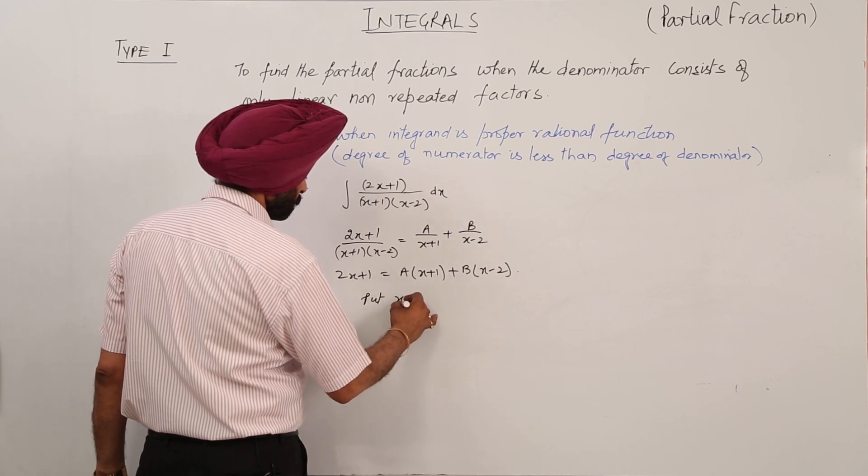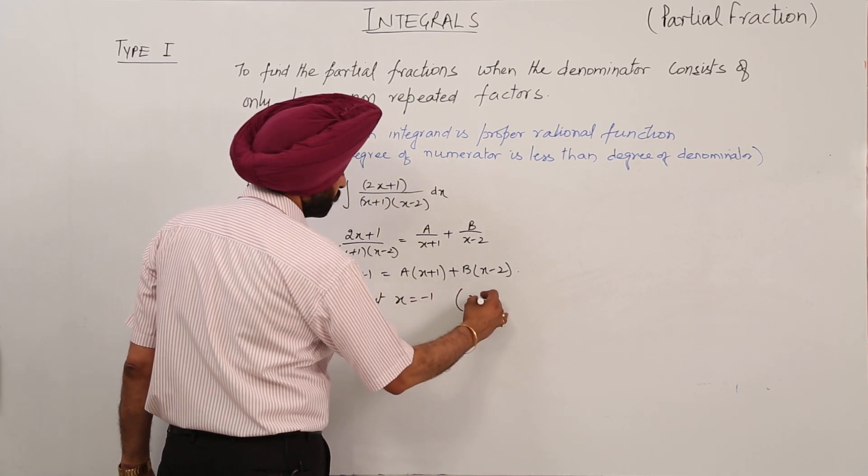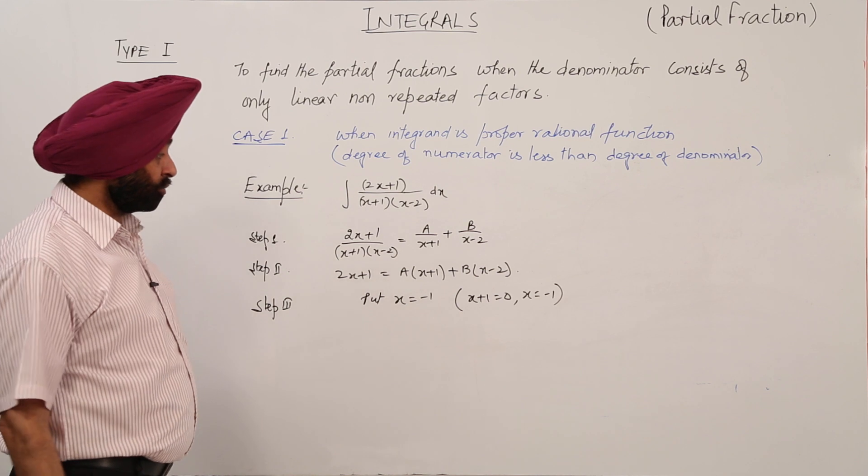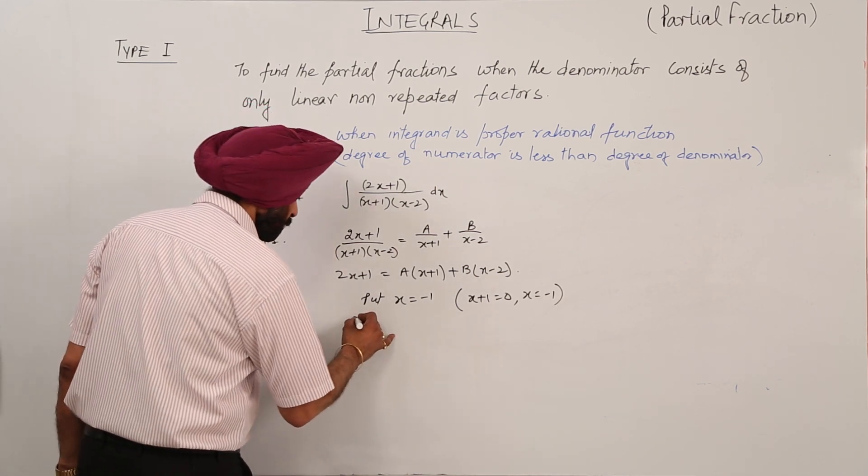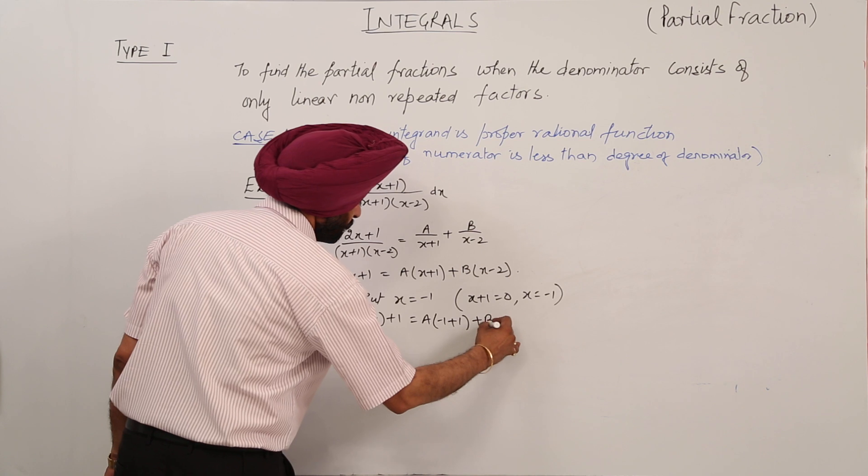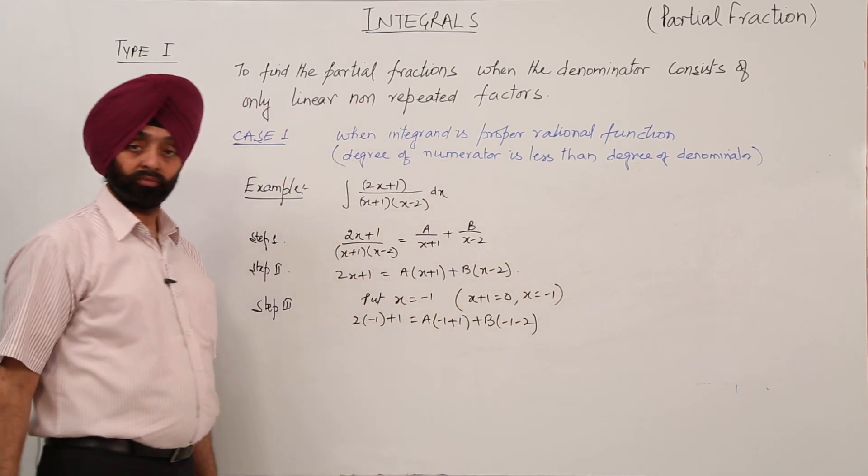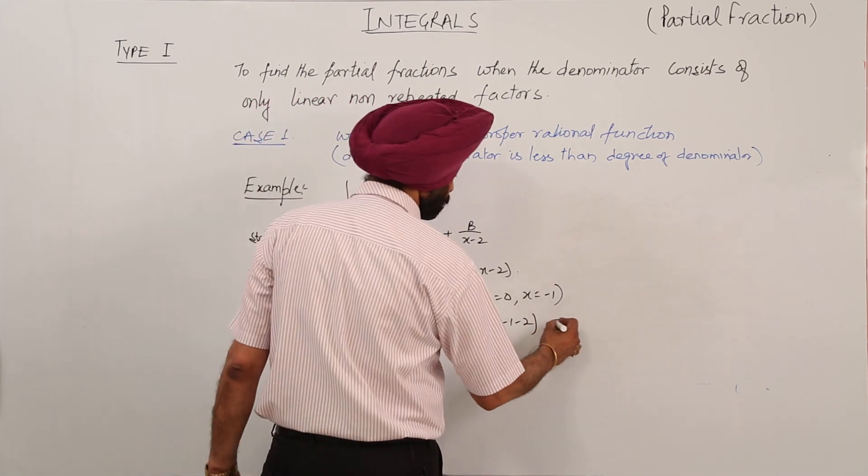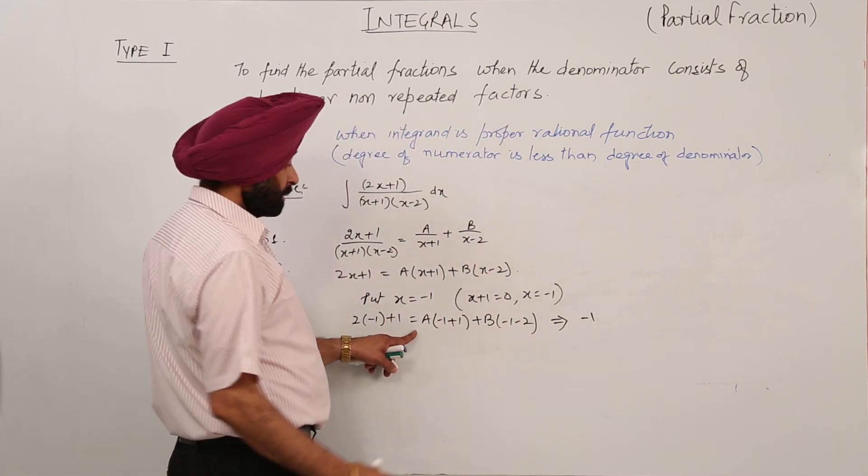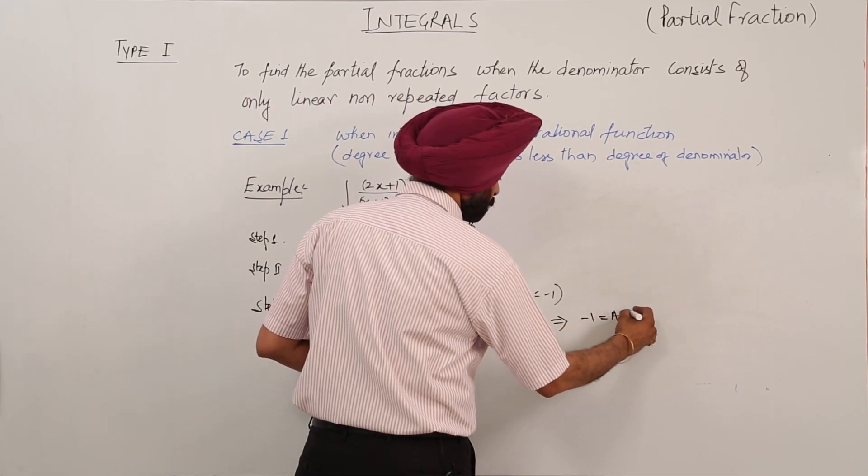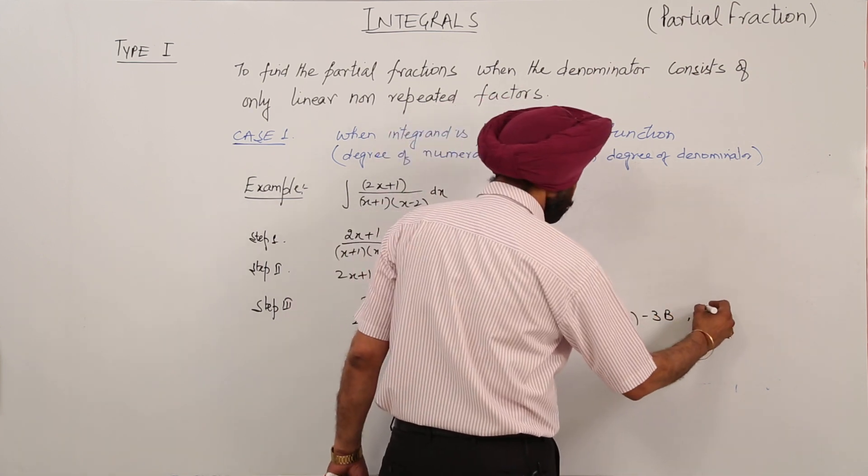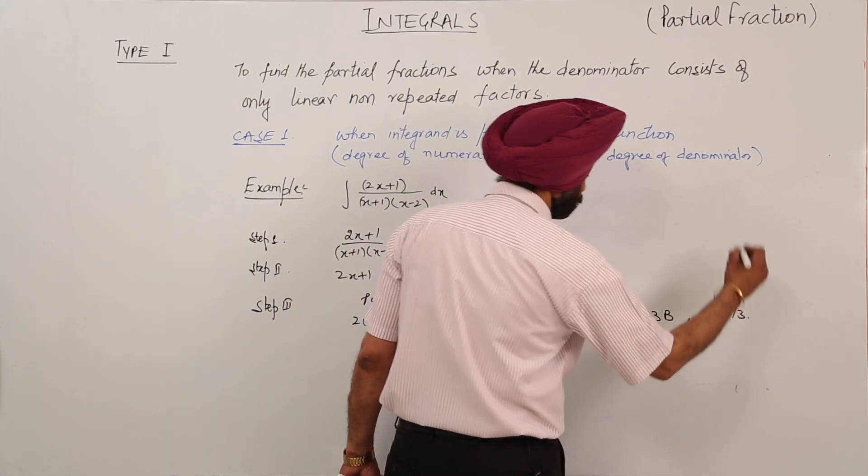Put x is equal to minus 1. We have x plus 1 is equal to 0, so x is equal to minus 1. Put x equals minus 1. On solving we are getting minus 2 plus 1, that is minus 1, is equal to A with 0 and minus 3B. This becomes B is equal to 1 by 3.